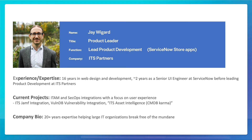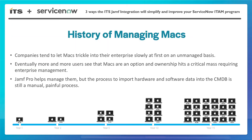They just weren't seeing that the Jamf integrations were really usable within the SAM product. Managing Macs at the enterprise level is a pretty common user story where a lot of organizations tend to let Macs trickle into their enterprise pretty slowly at first. Typically, because they're trickling in slowly, maybe the design department is letting three or four in. Because it's a small pool at first, they come in unmanaged.